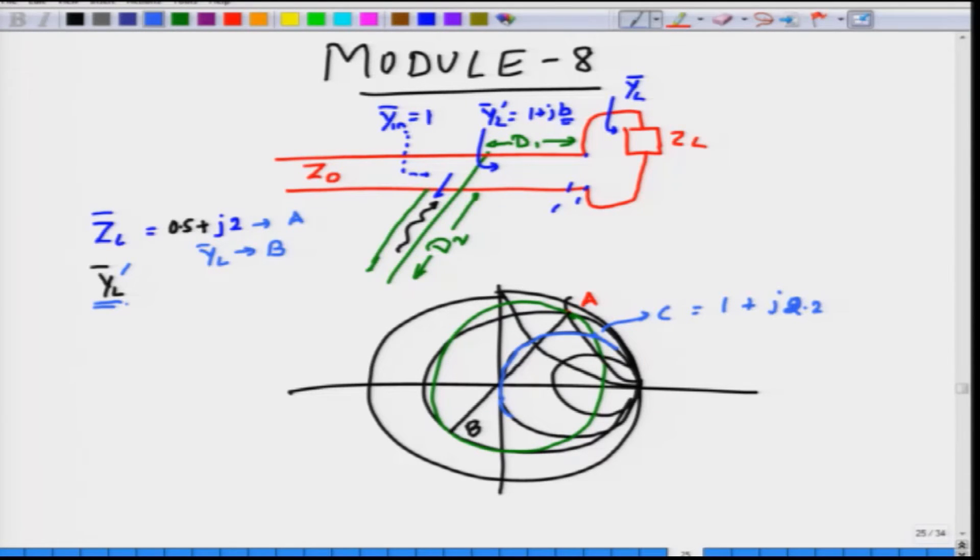ZL will correspond to point A, YL will correspond to point B and after transforming YL through a length D1, you get YL bar. What length did we transform? We moved a distance on the WTG scale from D prime, all the way up to C prime. This point was C prime and the intersection of these two points was the point C that we have found out. This length from B prime to C prime arc length will be given by D1.